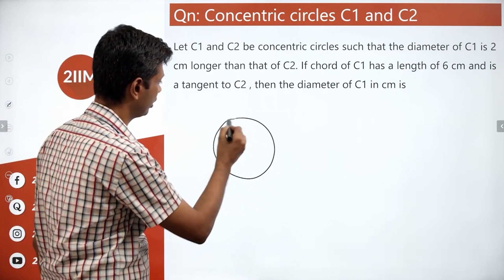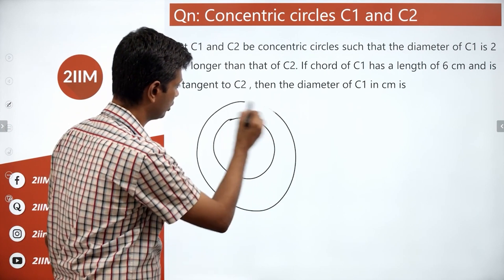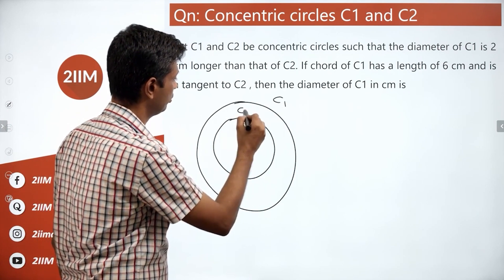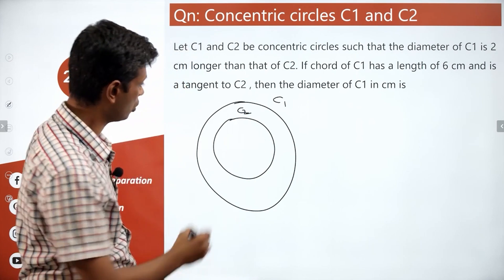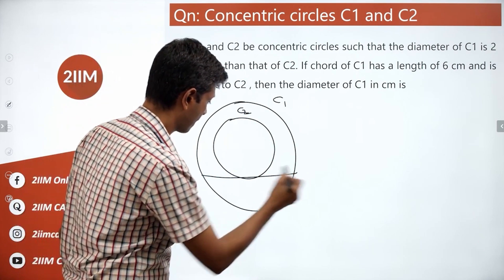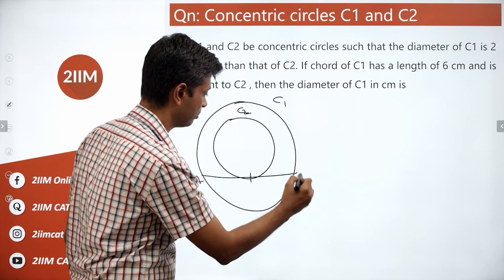So C2 is inside, C1 is outside. This is C1, this is C2. A chord of C1, this is 6 cm, say it's AB.